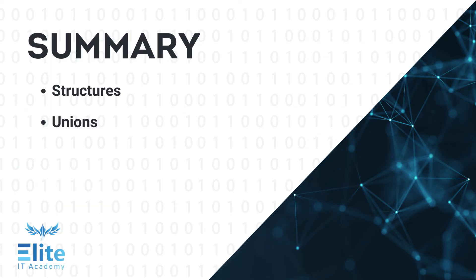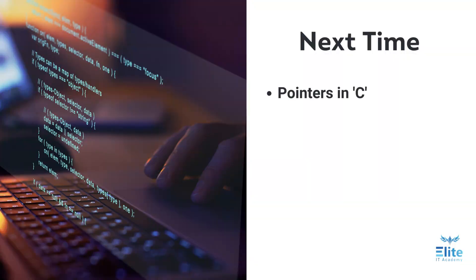As we have seen, both structures and unions are user-defined data types which can be used to create a collection of variables of different types. We have demonstrated the difference between a structure and a union. In the next video, we will discuss pointers, which are a very important topic in the C language and are used to access memory indirectly.